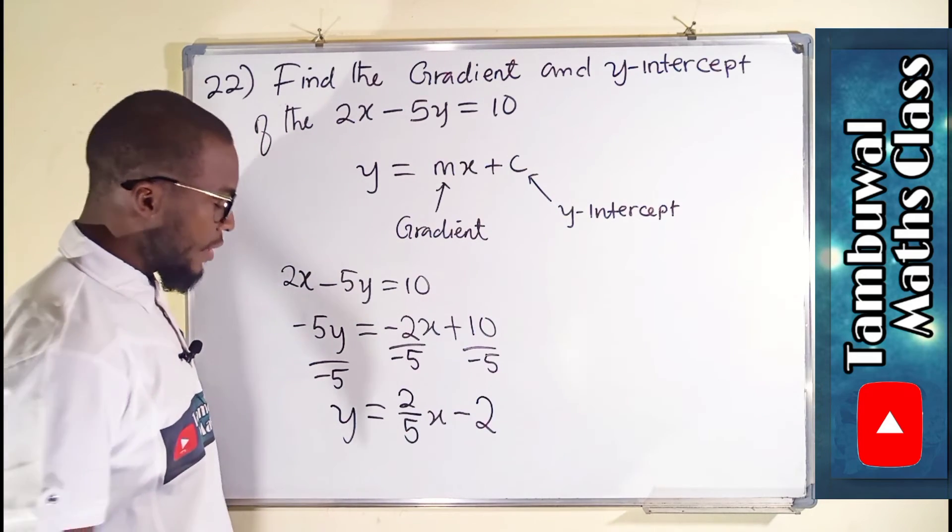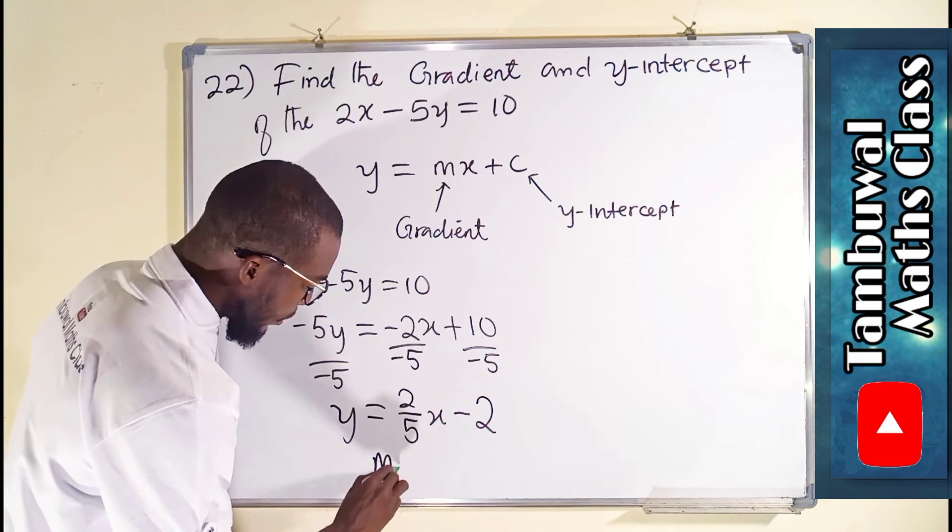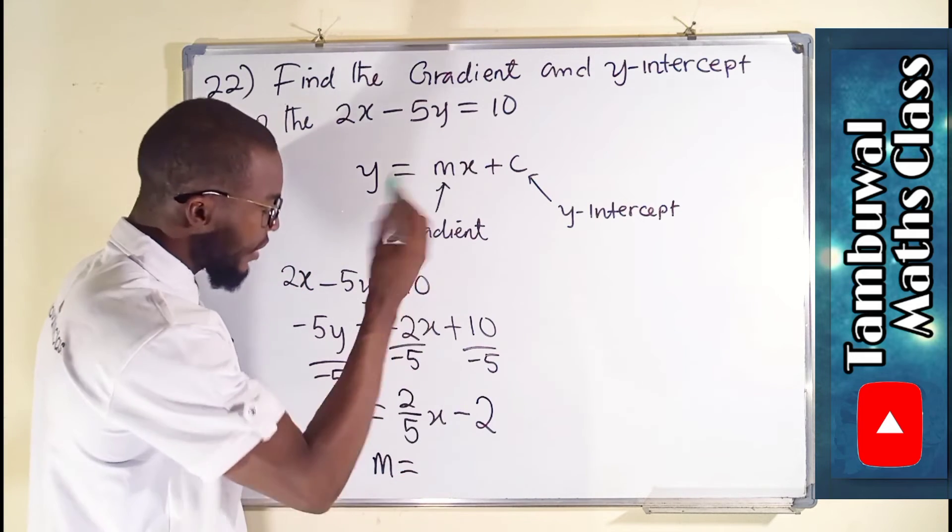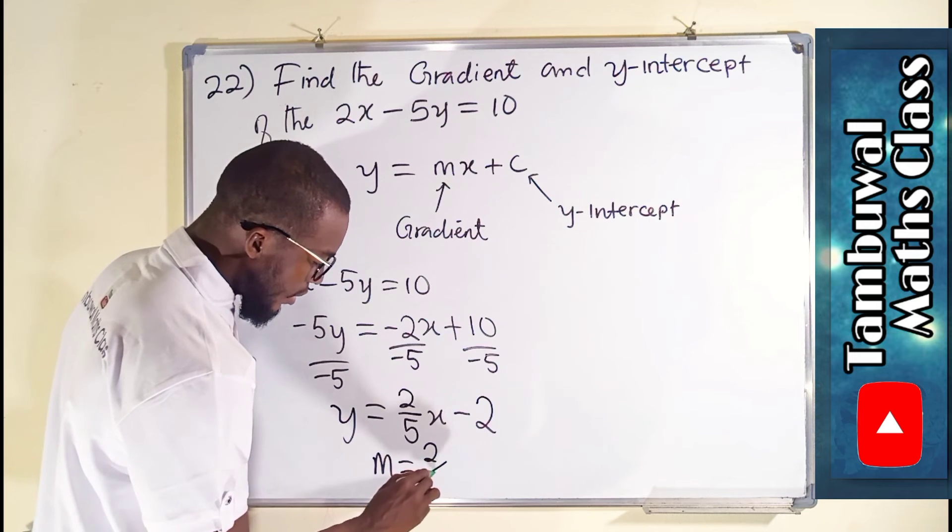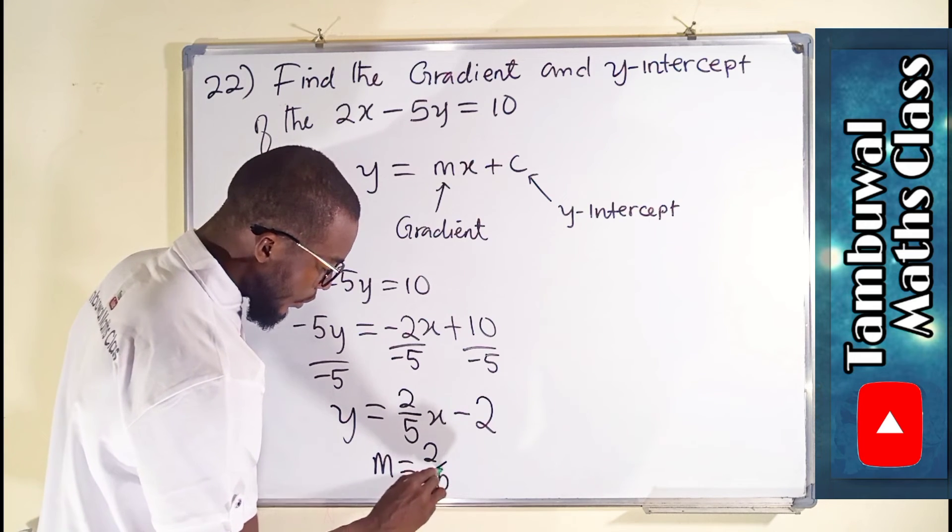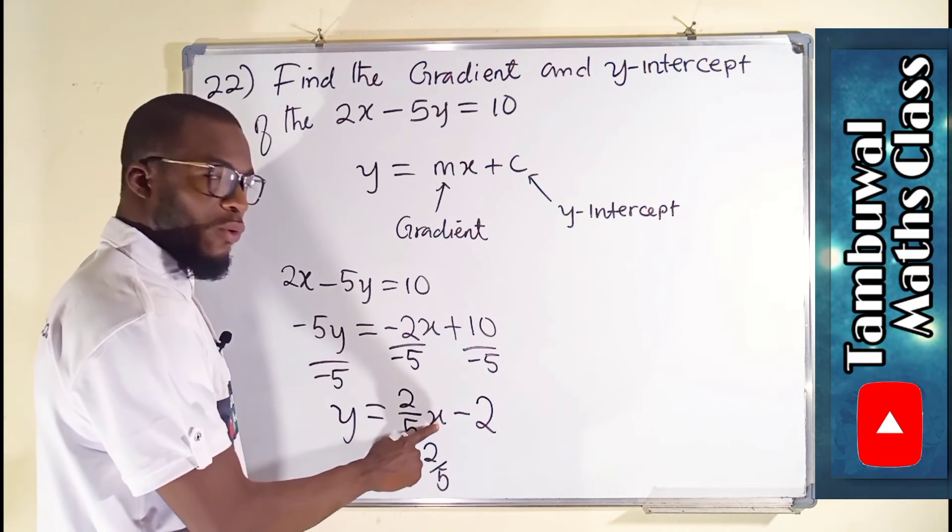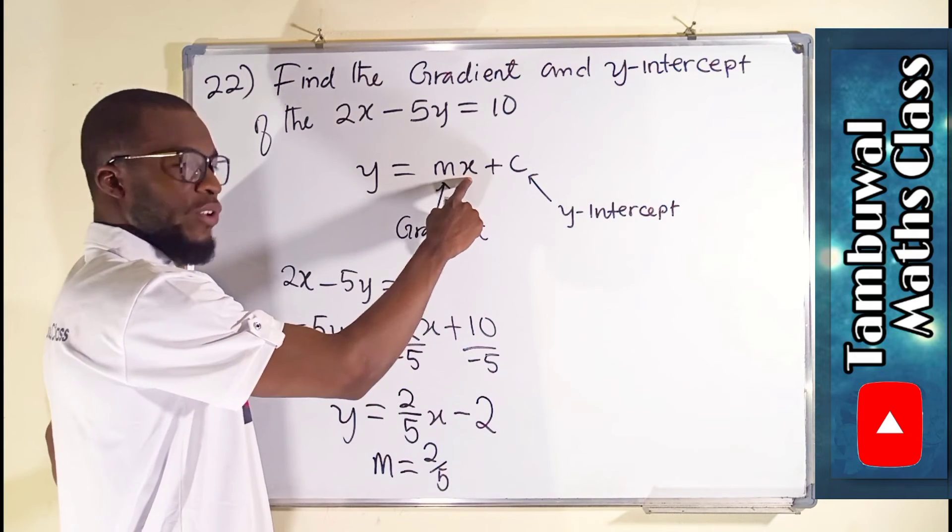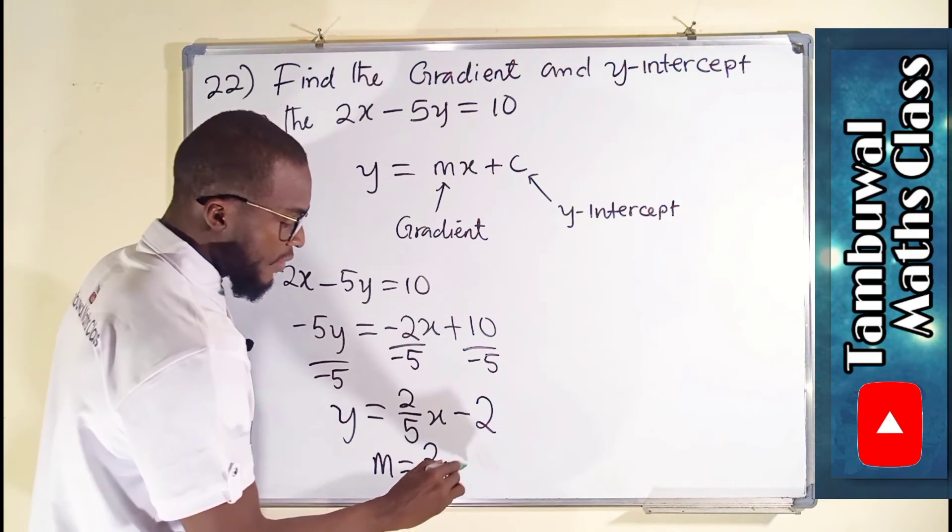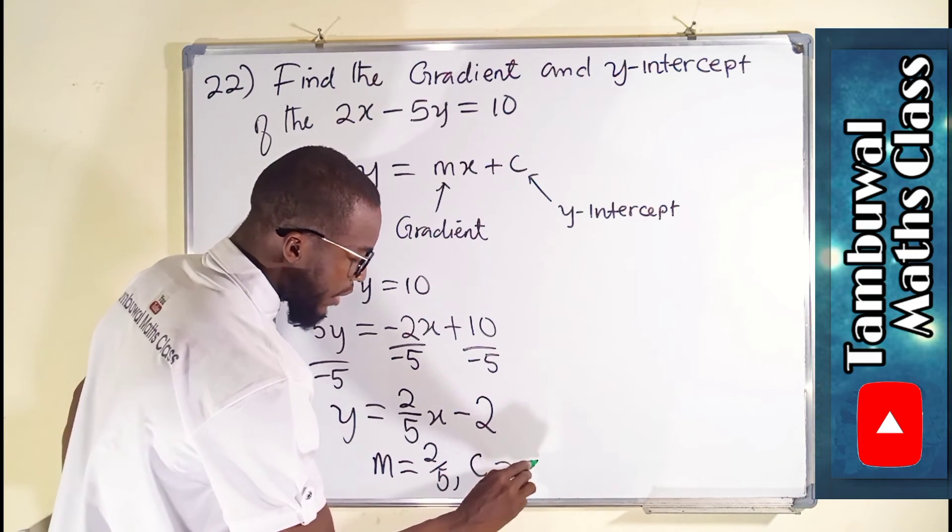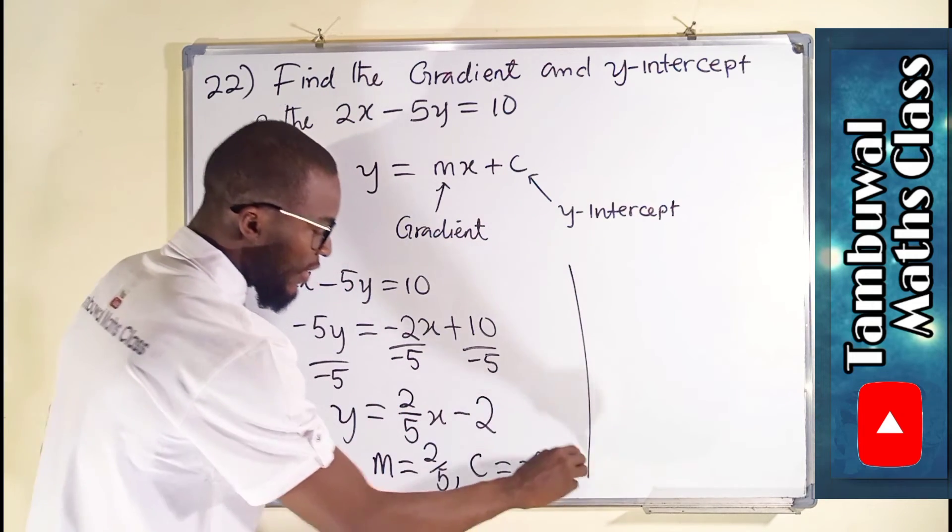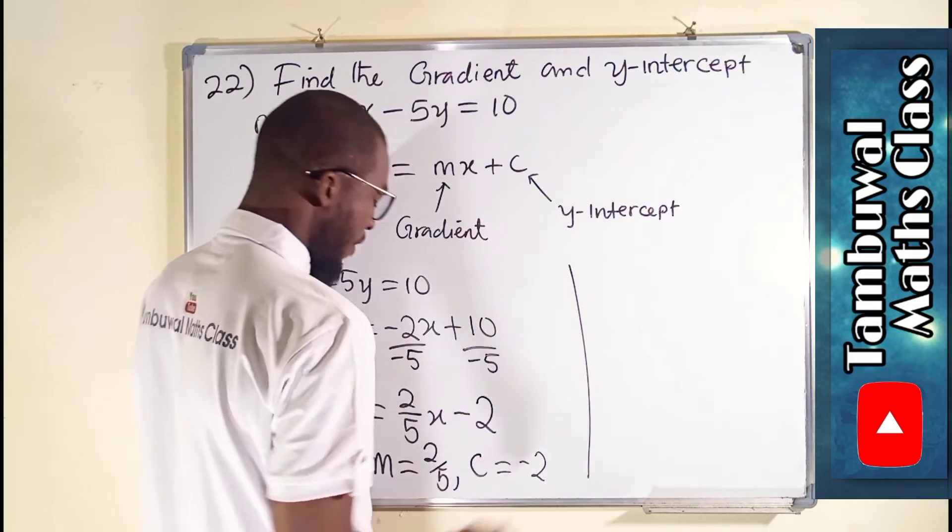So finally, we can conclude by saying m, which is our slope, or the gradient, is 2 over 5, because they are the coefficient of x. You can see it is the coefficient of x. While our c, which is the intercept, y-intercept, is equal to minus 2. So we can even write them together as our final answer.